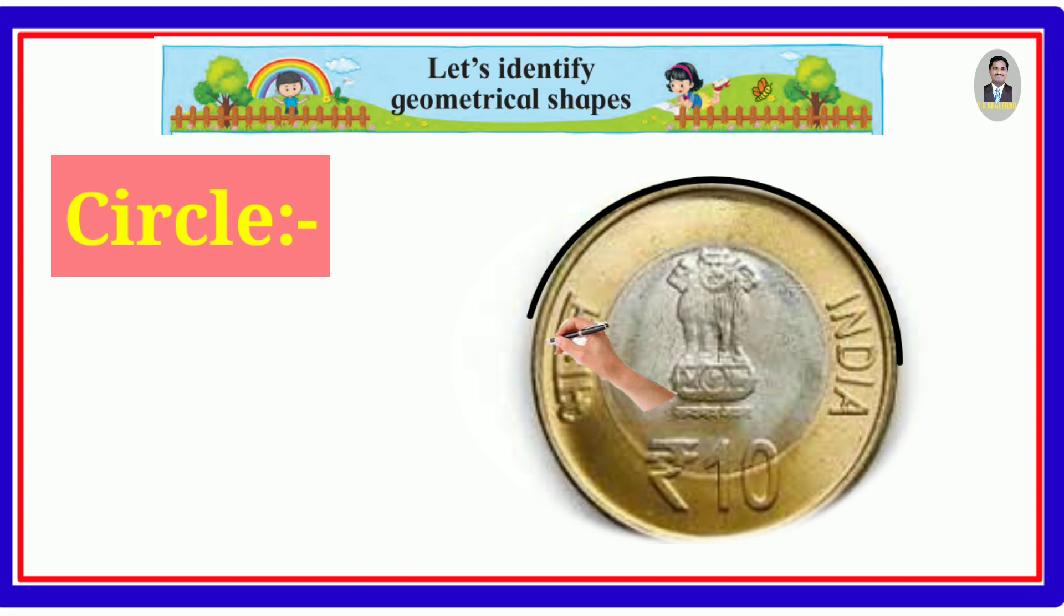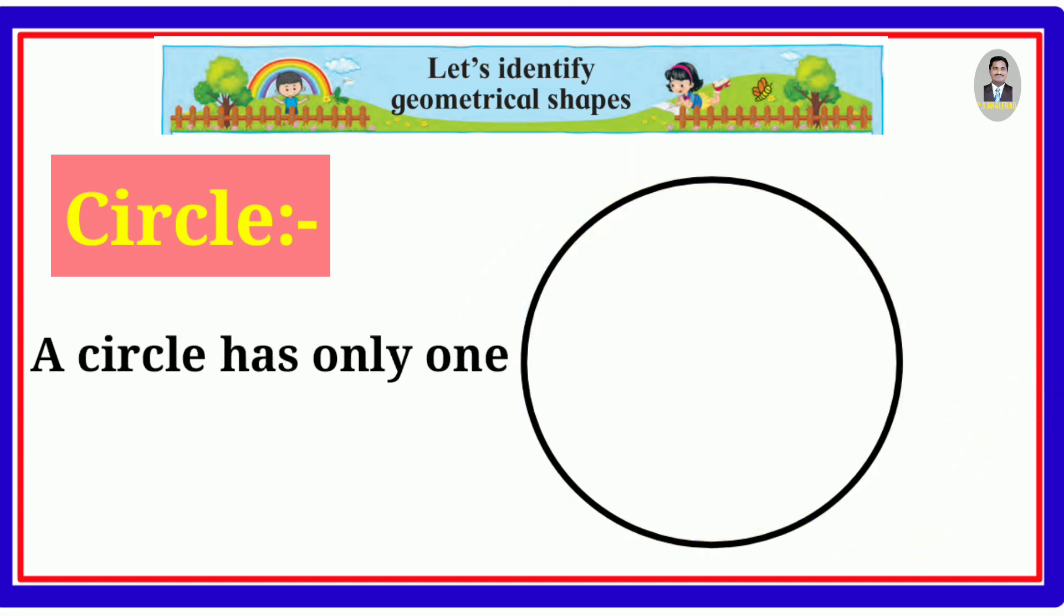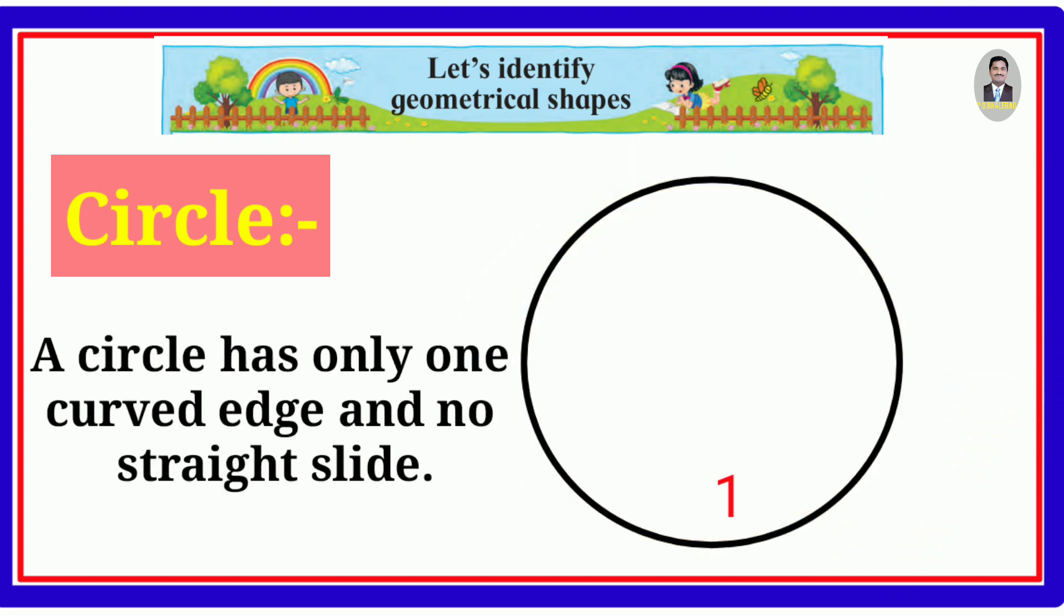Circle. Let's trace the edge of the coin. A circle has only one curved edge and no straight slide.